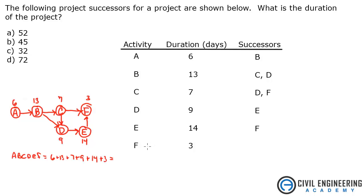So what does that give me? Path A, B, C, D, E, F gives me 52. So the answer to this is A.